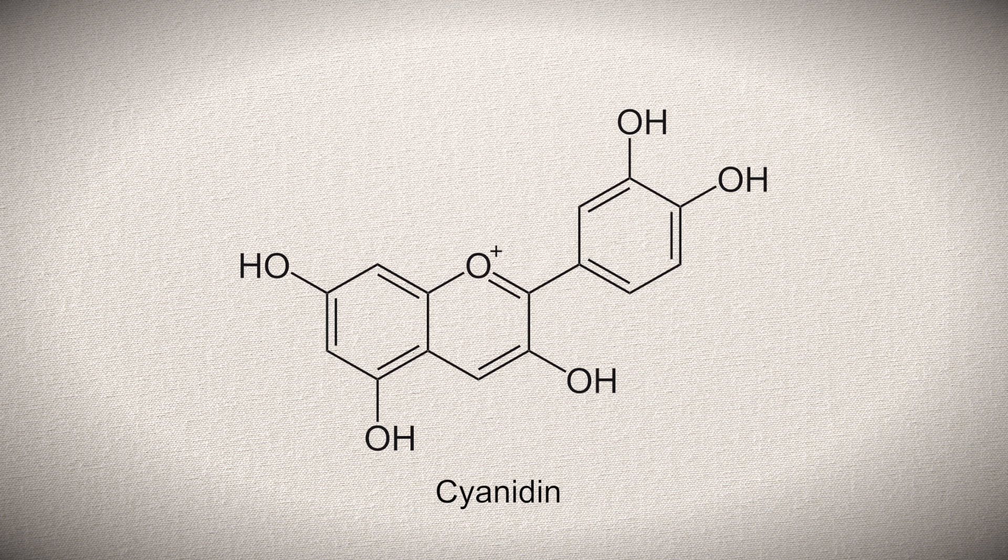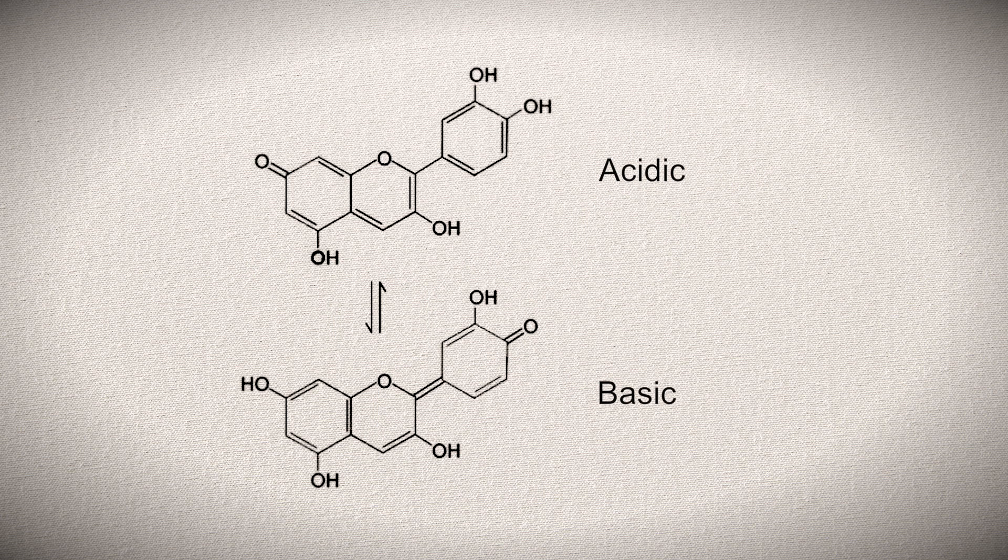The indicator in the cabbage is known as cyanidin. Depending on the pH, the structure of the molecule gains or loses protons and its structure changes, changing the color along with it. In high pHs, such as those associated with sodium hydroxide in solution, the cyanidin converts to the bottom form.